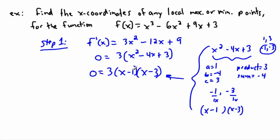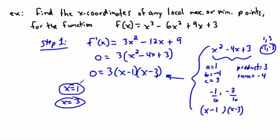So I have zero equals 3 times (x − 1) times (x − 3). What values of x make this zero? If x = 1, then (1 − 1) = 0, and zero times anything works. If x = 3, then (3 − 3) = 0, and zero times anything also works. So the result of step one is x = 1 and x = 3 — these are the x-values where the derivative is zero.